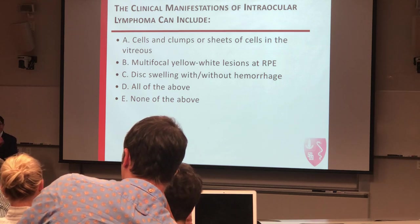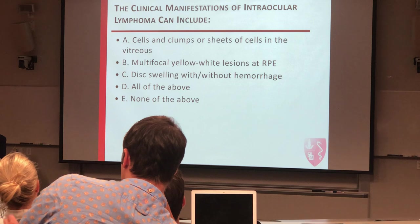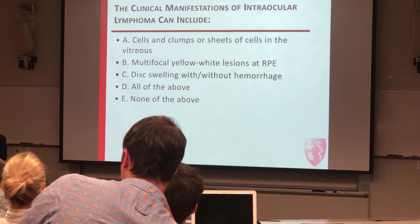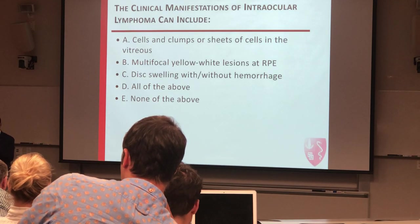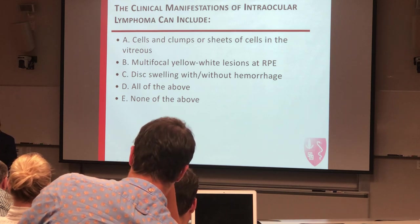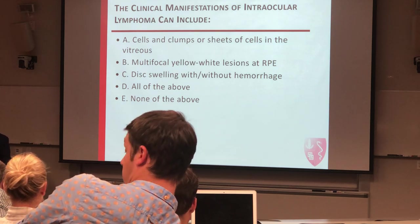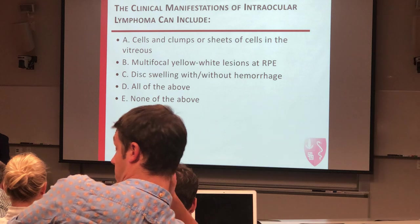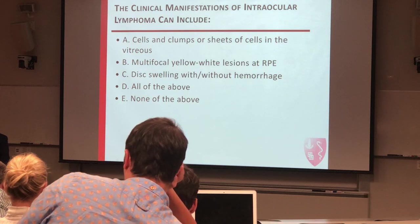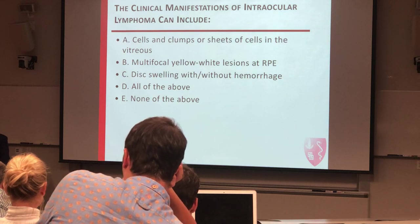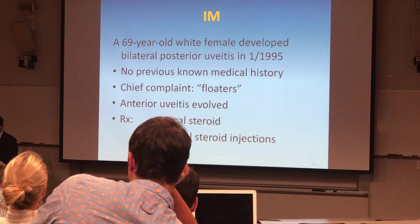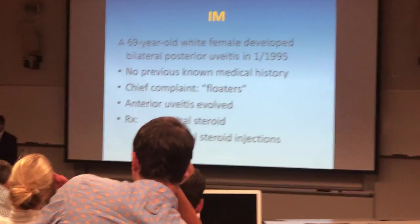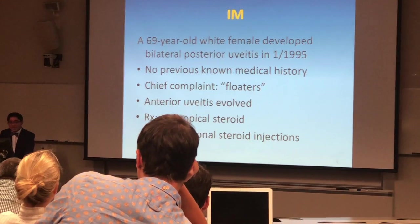If you ever come to clinic with me, when I look at this, I always say this is a sheet of cells. You've heard me say that many times. So when you see a sheet of cells, it's most likely, in my experience, that this is likely to be a lymphoma case. So this is definitely all of the above. The yellow-white lesion at the RPE level and the disc swelling are definitely possible as well. This is a case that I came across also when I was actually in fellowship.